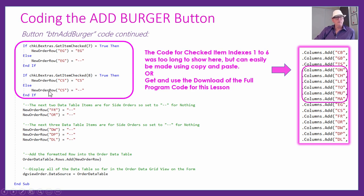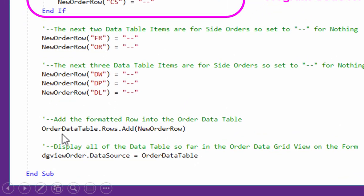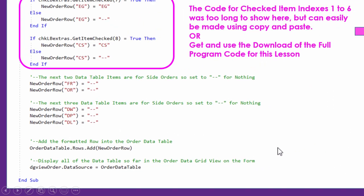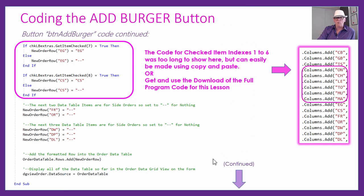Once we've got the row all formatted — with each column set to either an item code or dash-dash — we just add that new order row into the data table in program memory. Then we refresh the data grid view for the order, so it gets the latest copy of the order data table. It should now have all those item rows in it for the things that were ordered.